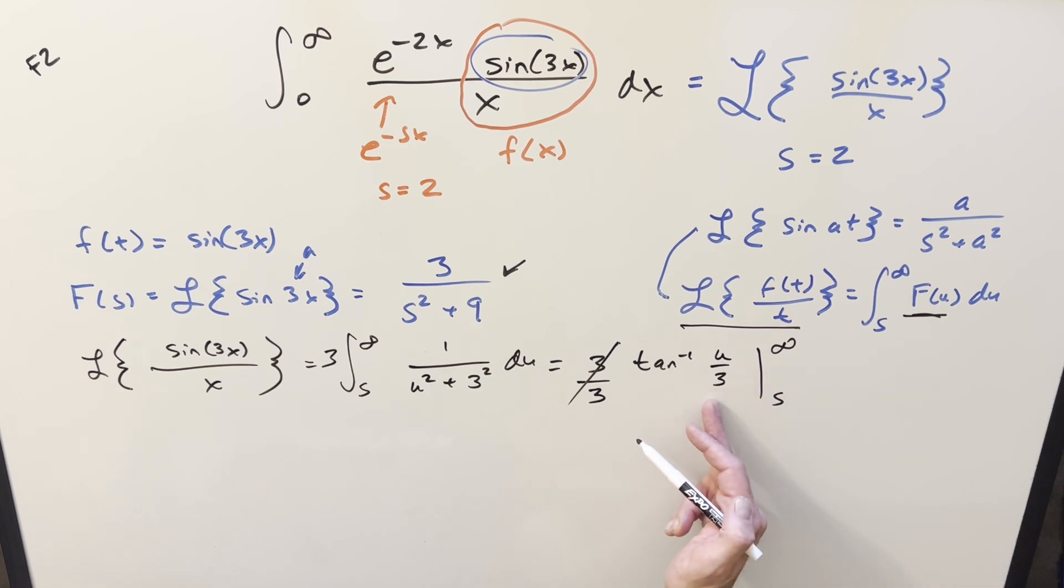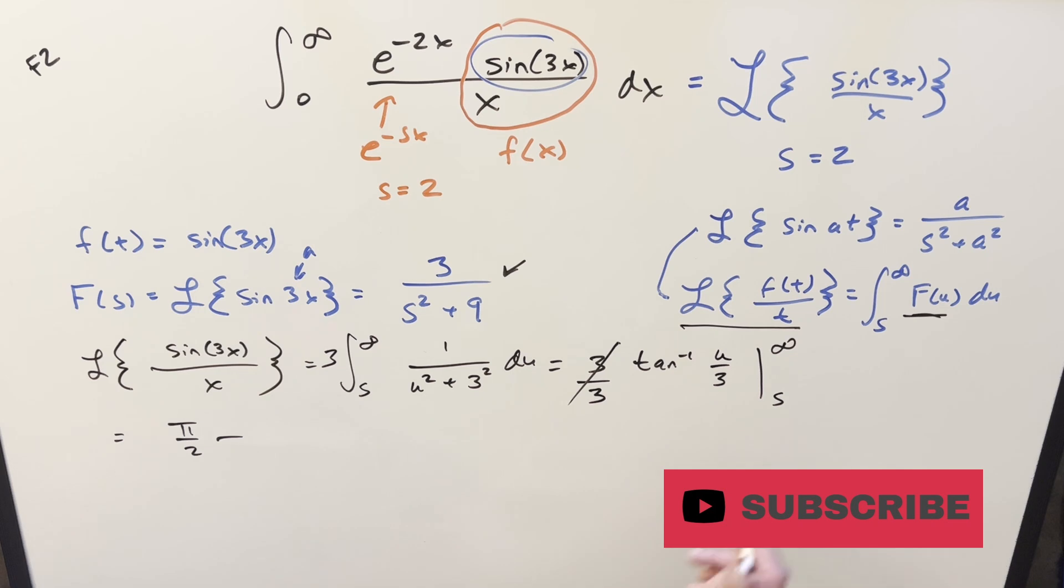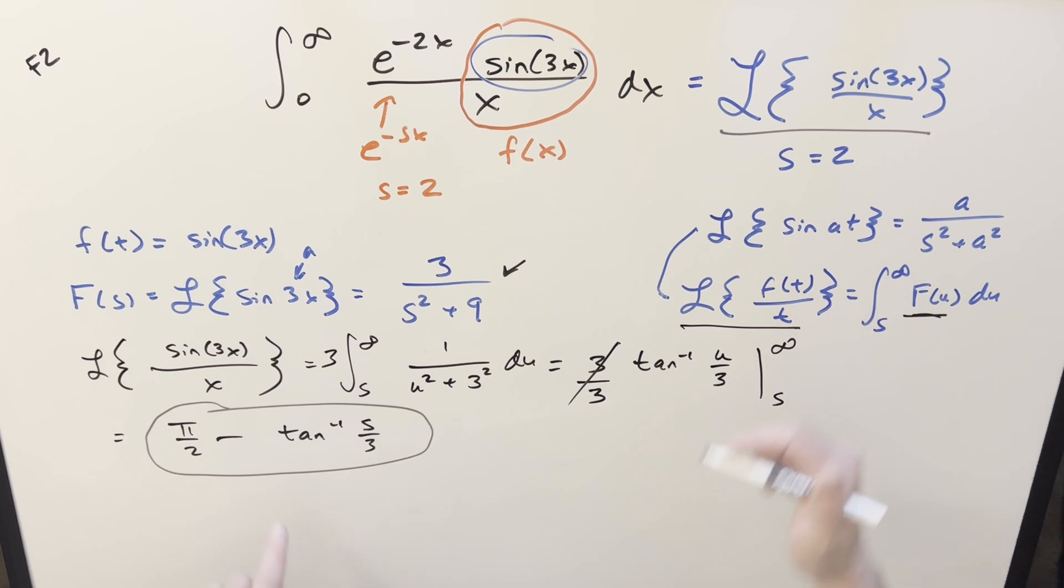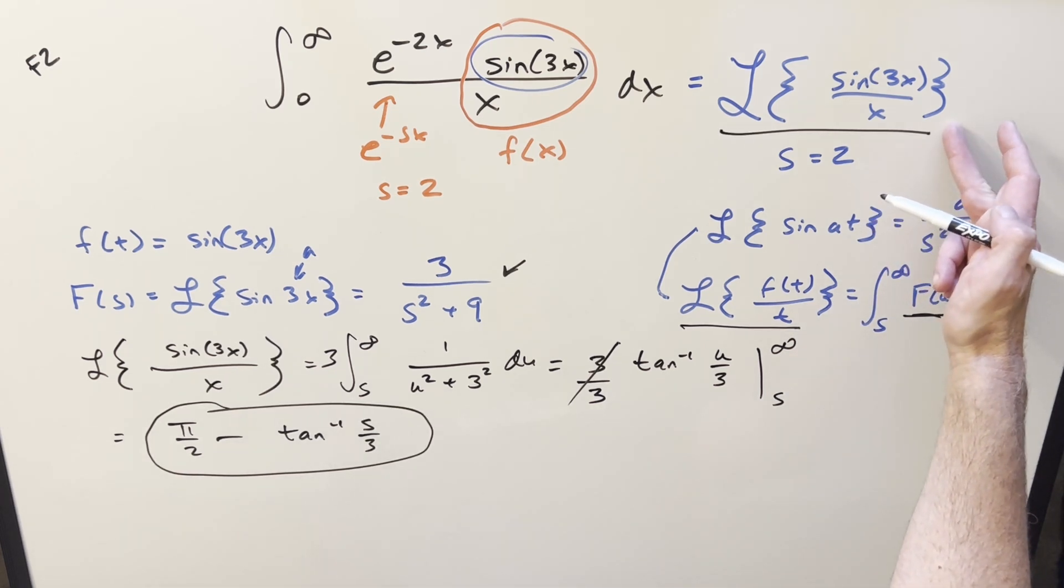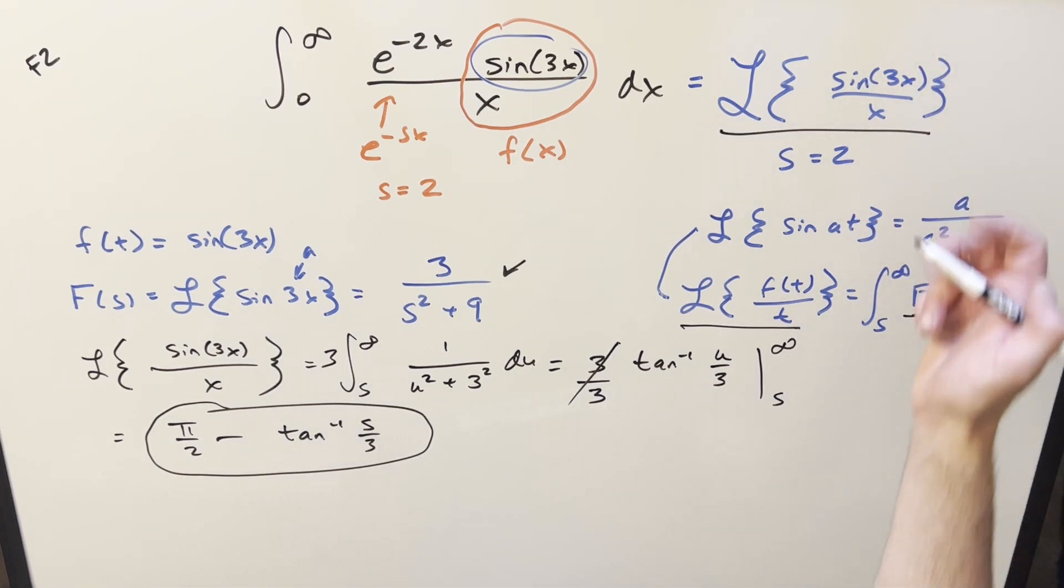Plug in infinity, the 3 is not going to matter. Arctan of infinity, that's just going to be pi over 2 minus plug in an s. We're just going to leave it. This is just going to be arctan s over 3. So this right here is a fine solution if all we wanted was just the Laplace transform of sin 3x over x.